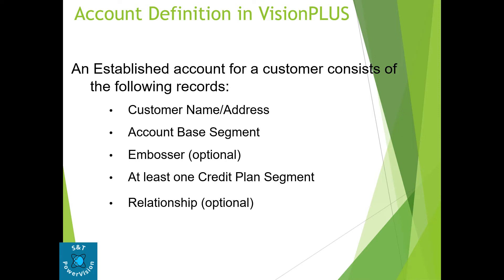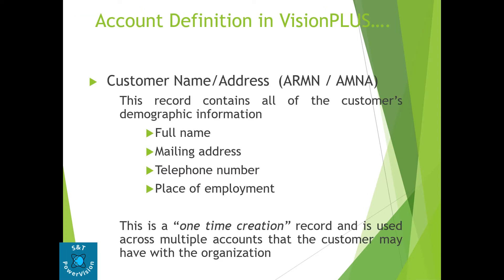Customer name and address are entered through the ARMN screen, also called the ARAN screen. After that, the account base segment is done through the ARMB screen or ARAB screen for addition, and the embosser through ARAE. Customer name and address contain the full name, mailing address, telephone number, and place of employment. This is a one-time creation for a given customer number.